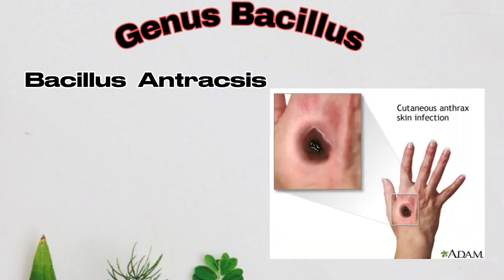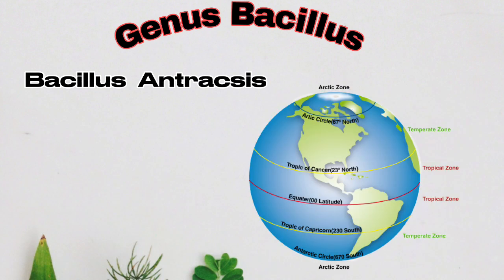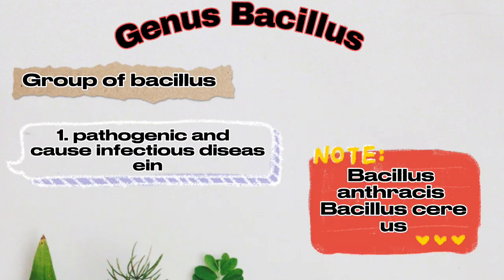Bacillus anthracis can survive up to 1,520 years in soil. There are areas in the world where the disease is endemic, mostly located in the tropics. These areas are called incubator areas for Bacillus anthracis because germination and multiplication of spores can occur in a short time. There is also warm climate and alkaline soil, which is why it is difficult to eradicate the disease.